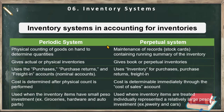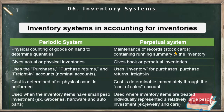What's the difference between the periodic and the perpetual? In a periodic system, physical counting of goods on hand will determine the quantities — there's a need to conduct a physical count in order to know the ending inventory. But in a perpetual system, although physical counting is still required, if we want to know how much our inventory is, we don't need to count because it's already recorded in the inventory account. In the perpetual system, we maintain records called stock cards that contain a running summary of the inventory.